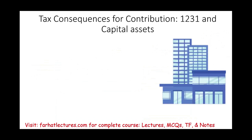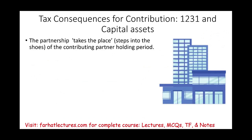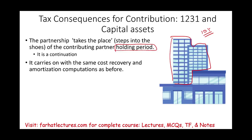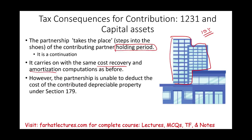Let's talk a little more about tax consequences for Section 1231 and capital assets. The partnership takes the place of the contributing partner's holding period. Whatever holding period you've had — say five years — it will be five years with the partnership. They step into the shoes of the partner; it's a continuation. If you bought a building 10 years ago, it's considered purchased 10 years ago for the partnership. It carries the same cost recovery and amortization computation as before. And note: a partnership cannot deduct Section 179.